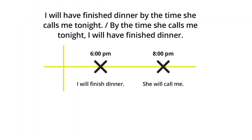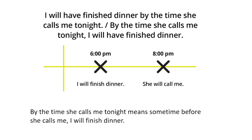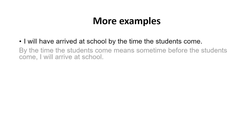Third example: 'I will have finished dinner by the time she calls me tonight.' We can also say: 'By the time she calls me tonight, I will have finished dinner.' The deadline is 8 pm — she will call at 8, so I will have finished dinner sometime before that, for example at 6 pm. By the time she calls, I will have already finished dinner before the 8 pm deadline.